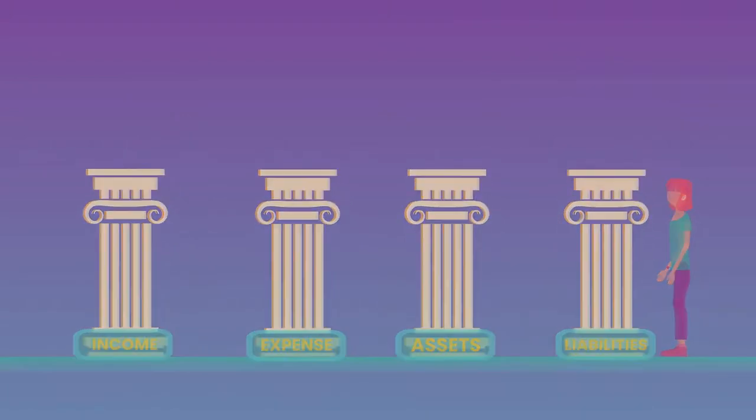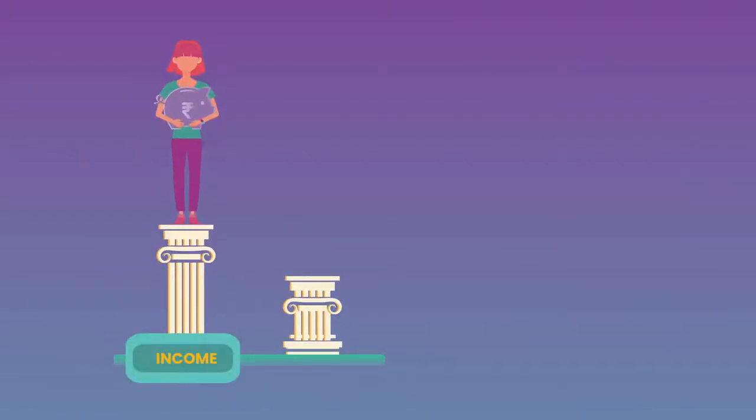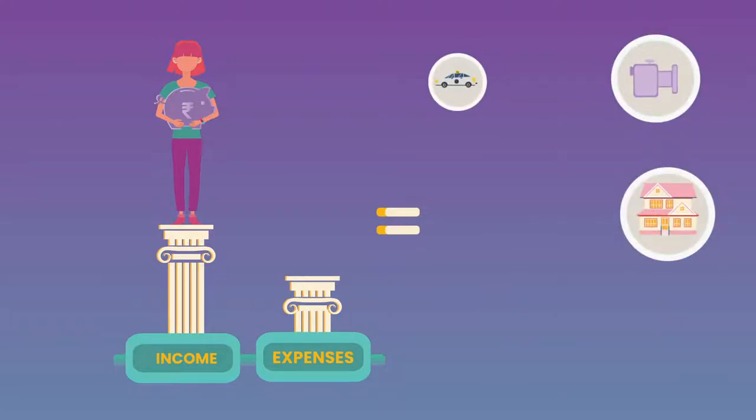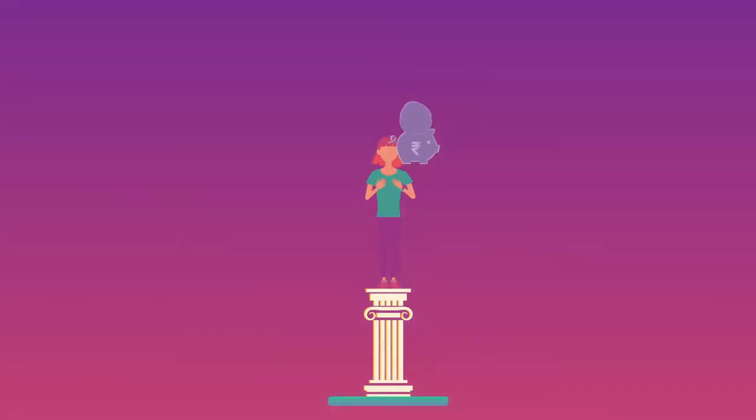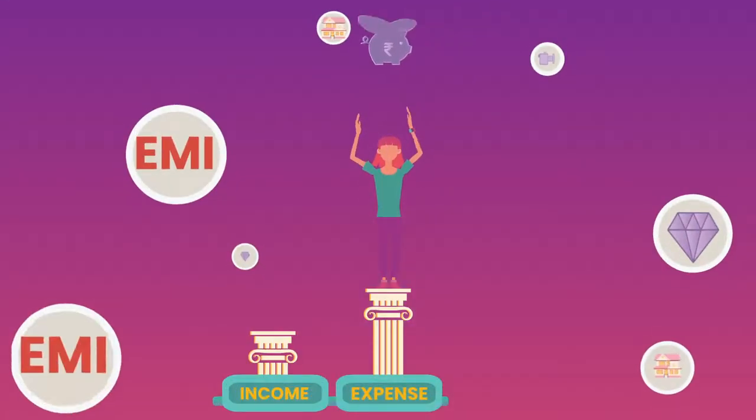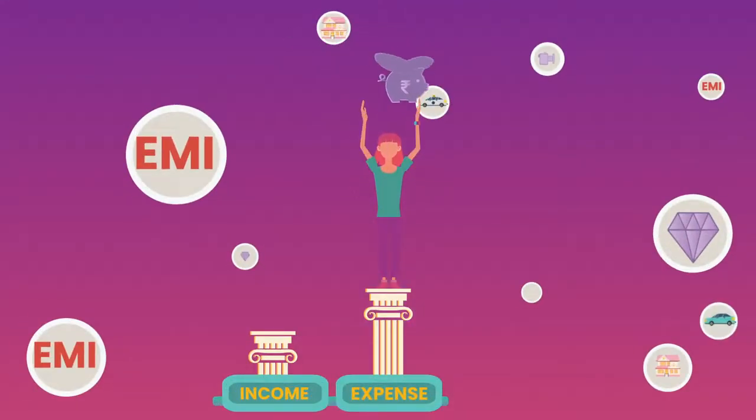When our income is more than expenses, we have extra money. Saving this allows us to create more assets. However, when expenses are more than our income, we fall short on money and end up borrowing, thus creating liabilities.